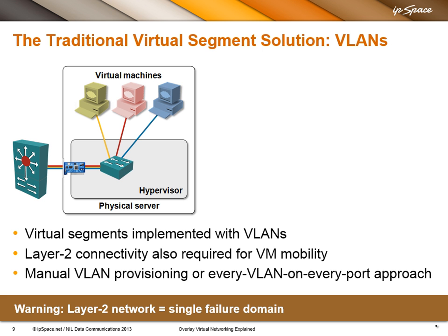The only problem is that we have to provision the VLANs in the hypervisor, in the virtual switch, and we have to provision them in the physical switch. And someone has to do the physical switch provisioning every time you deploy a new VLAN or a new subnet. Let's say you deploy this blue subnet — someone obviously has to configure the blue VLAN on the physical switches.